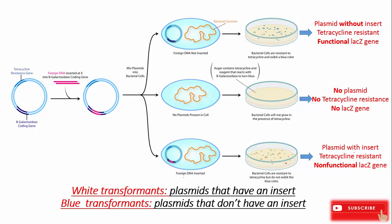Through blue-white screening, we can confirm the presence of the recombinant BAC vector. That is all for today's lecture — see you next time.